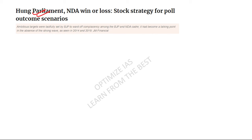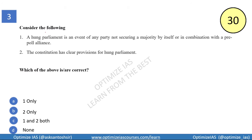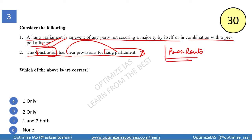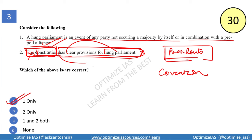The third question is on hung parliament. With BJP not securing a majority, this is a relevant topic. Statement one: a hung parliament is an event where no party secures majority by itself or in combination with a pre-poll alliance — this is correct. Statement two: the Constitution has clear provisions regarding hung parliament — this is incorrect. The answer is statement one only.